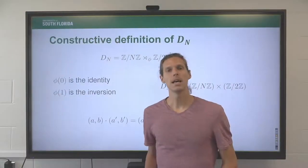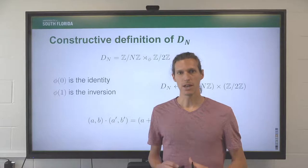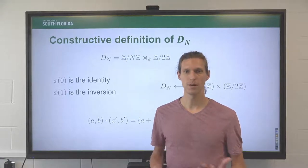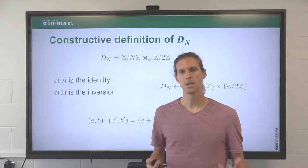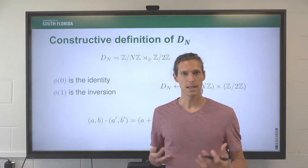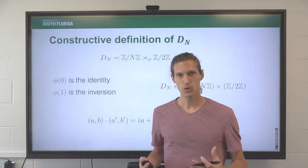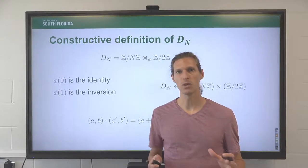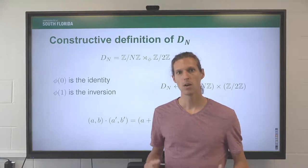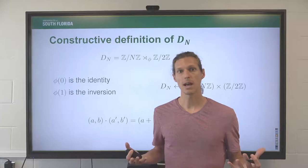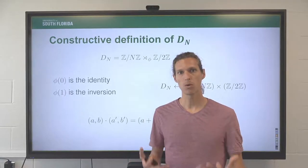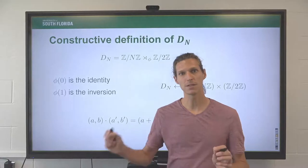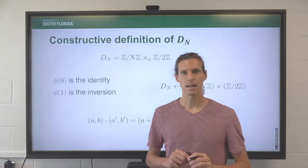There is a more constructive way to describe the dihedral group using a semi-direct product. We describe D_n as Z mod nZ times Z mod 2Z with a very special operation. Unlike the Cartesian product where we use component-wise addition, here we use a different rule, and that's what makes the dihedral group different from Z mod nZ times Z mod 2Z.